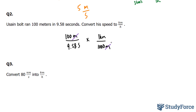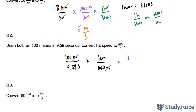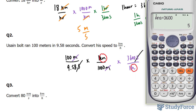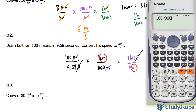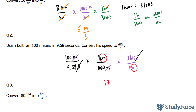Similarly, we need to go from seconds to hours. Using 3,600 seconds at the top and 1 hour at the bottom, the seconds will cancel out, and we're left with kilometers and hours to work with. So let's multiply all of this out: 100 times 3,600 divided by 9.58 times 1,000 gives us 37.57 kilometers per hour — that is the speed of Usain Bolt in kilometers per hour.